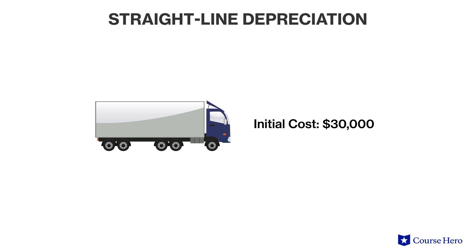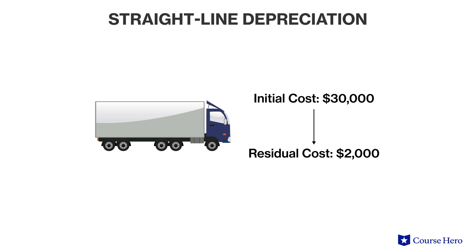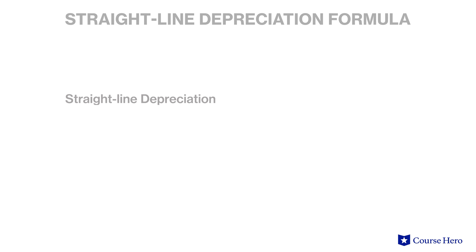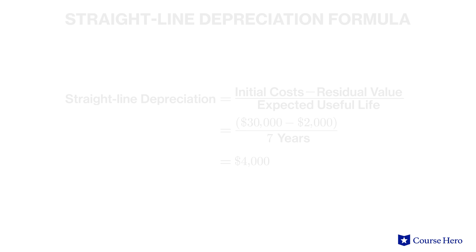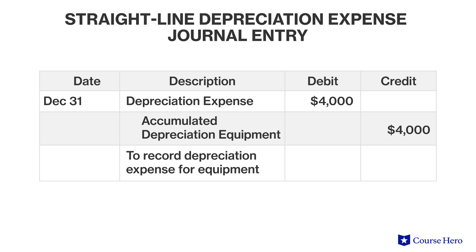Suppose that Big Truck Company buys a new piece of equipment for $30,000 that is expected to have a useful life of seven years and will likely be worth $2,000 at the end of its life. If the asset is depreciated using the straight line method, the annual depreciation expense will be $4,000. Each time an asset is depreciated, regardless of the method used, the depreciation amount is recorded as an expense on the income statement as a debit, and the credit comes from an accumulated depreciation account, which is a contra-asset account used to reduce the carrying amount of the asset from the initial cost to an amount net of depreciation already taken.